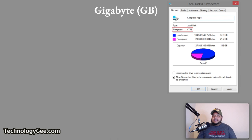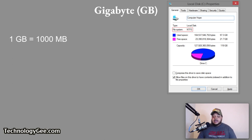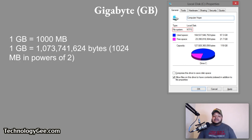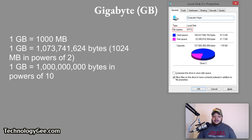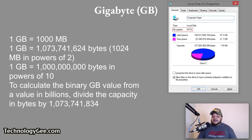A gigabyte is equal to 1,000 megabytes and it precedes the terabyte unit of measurement. Depending upon the device, a gigabyte is either 1,073,741,824 bytes or 1,024 megabytes when expressed in powers of 2, or 1,000,000,000 bytes when expressed in powers of 10. To calculate the binary gigabyte value from a value in billions, you divide the capacity in bytes by that large number.